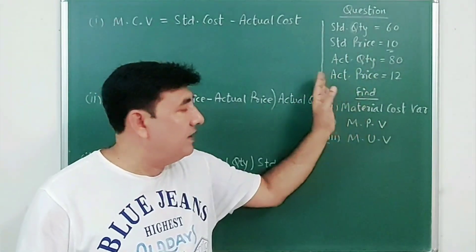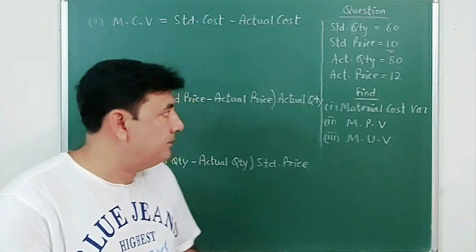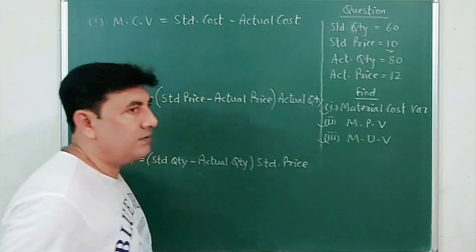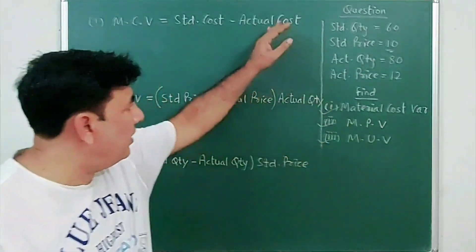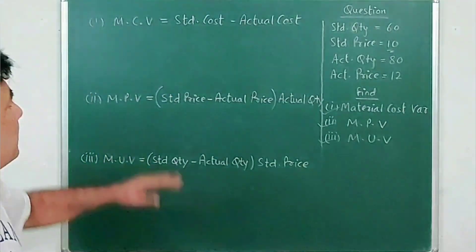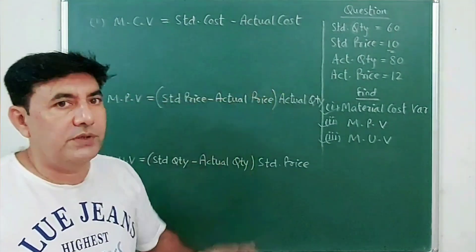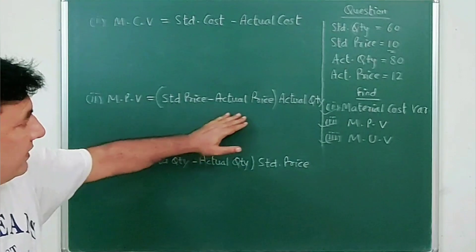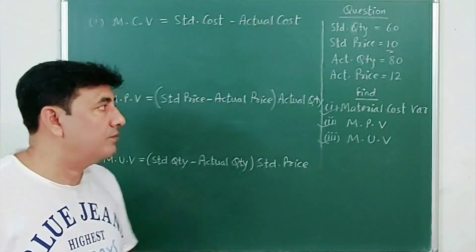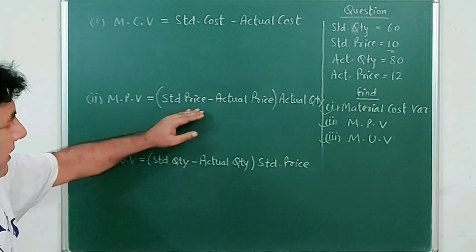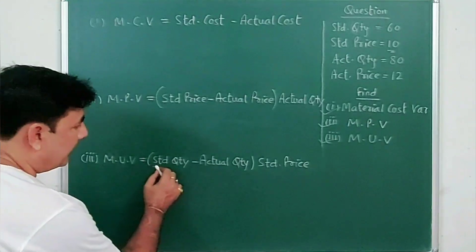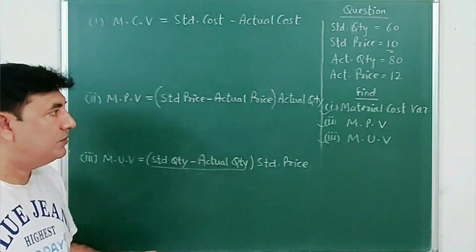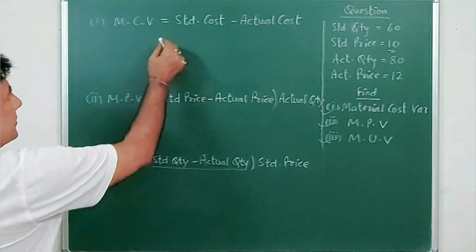Standard quantity, standard price, actual quantity, and actual price are given. You are asked to find material cost variance, material price variance, and material usage variance. The formulas are: material cost variance equals standard cost minus actual cost; material price variance equals standard price minus actual price multiplied by actual quantity; and material usage variance equals standard quantity minus actual quantity multiplied by standard price.